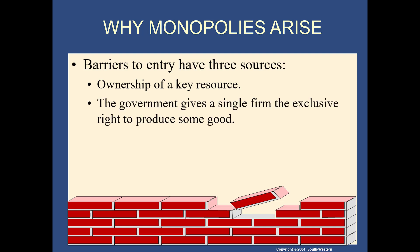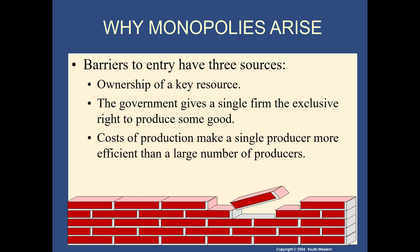Barriers to entry have three sources: ownership of key resources, the government giving a single firm exclusive rights to produce some goods, and cost of production making a single producer more efficient than a large number of producers. For example, if somebody happened to own a gold mine, a patent, or copyrights for something — they own a key resource — that would be a monopoly right there, because nobody else owns that resource.